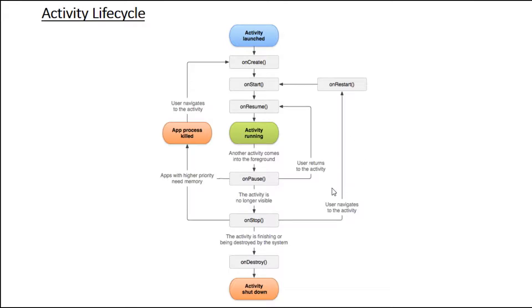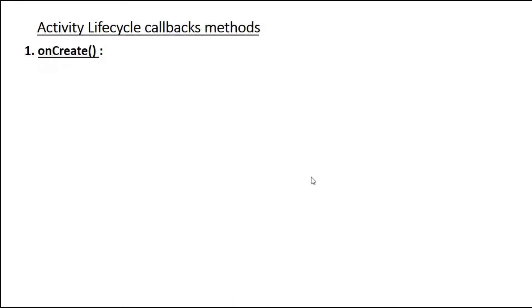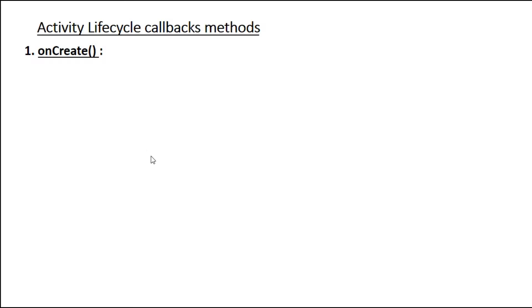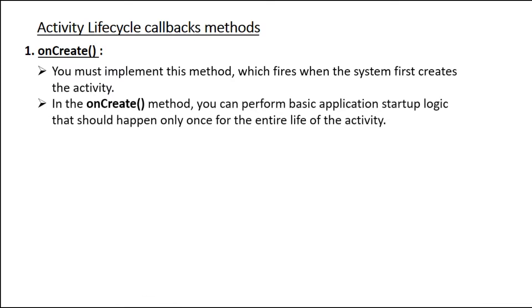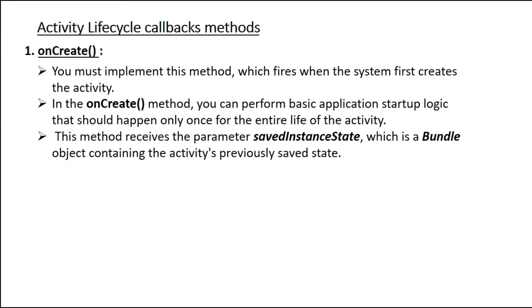Now we can learn about the lifecycle callbacks in detail. The first method is onCreate. You must implement this method, which fires when the system first creates the activity. In onCreate, you can perform basic application startup logic that should happen only once for the entire life of the activity. This method receives the parameter savedInstanceState, which is a Bundle object containing the activity's previously saved state.